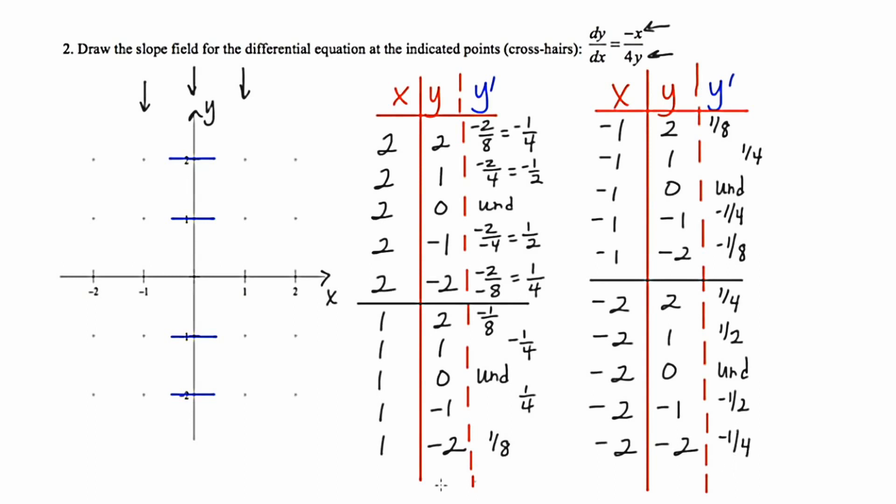We've done all the calculations, so now let's go and actually draw the little segments that make up this slope field. The different slope values we have are 1 eighth, 1 fourth, and 1 half — 1 eighth is the least steep, then 1 fourth, then 1 half.